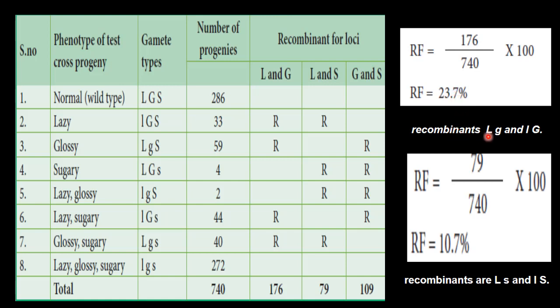So this is the recombinance, capital L and capital G. Capital L, capital G recombinant frequency is 23.7. Then we will go for L and S, which is dominant. This is the total. We have got 79 offspring. So 79 divided by 740, that is now total number of offspring into 100 equal to 10.7 percent is the recombinant frequency.